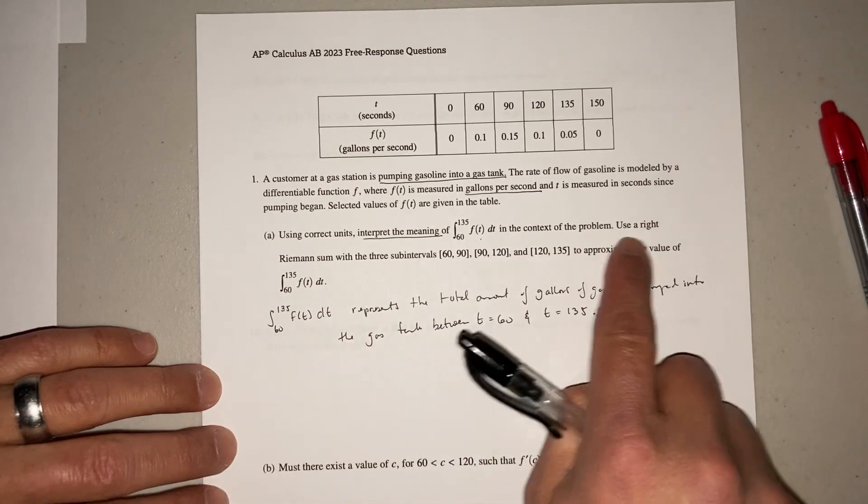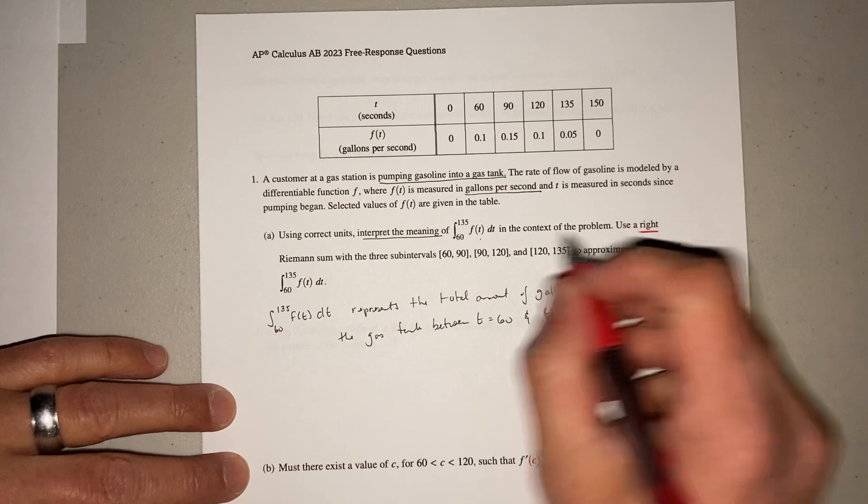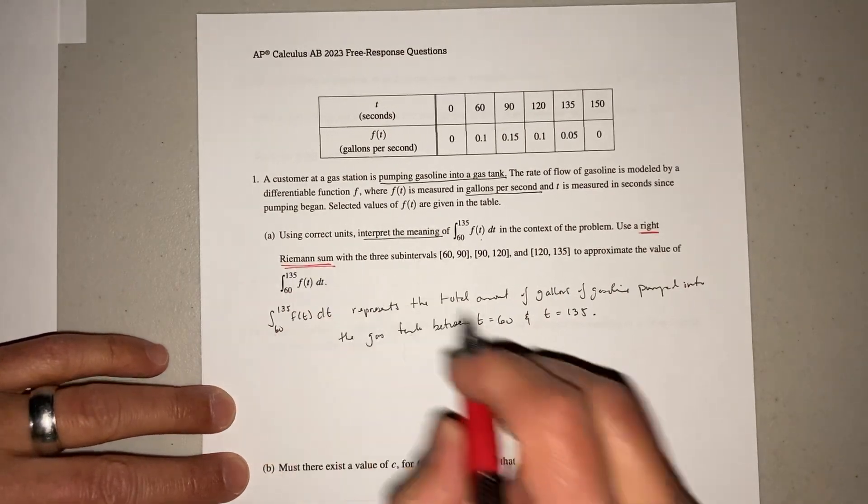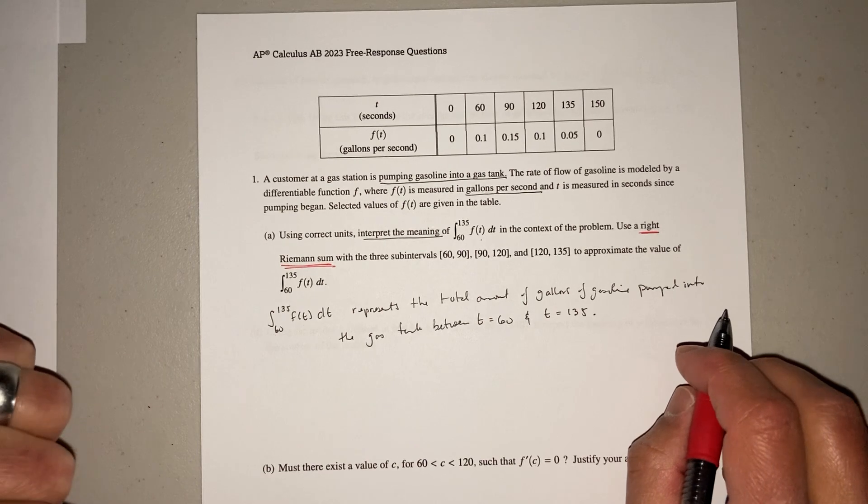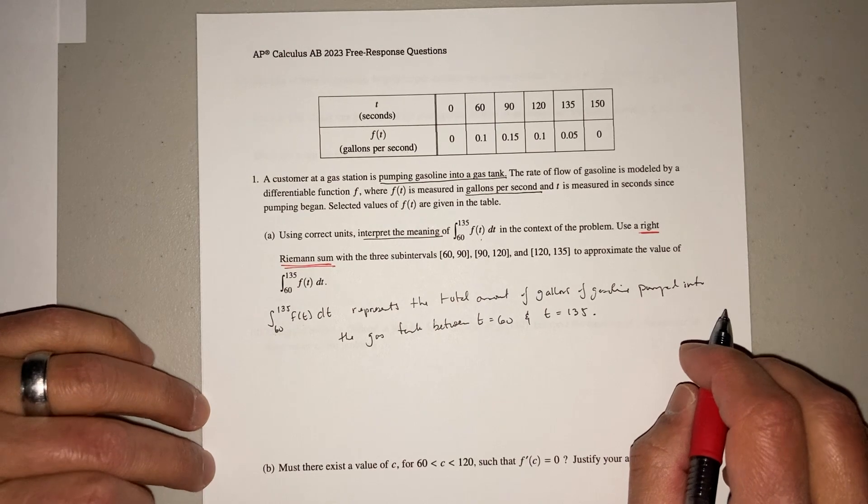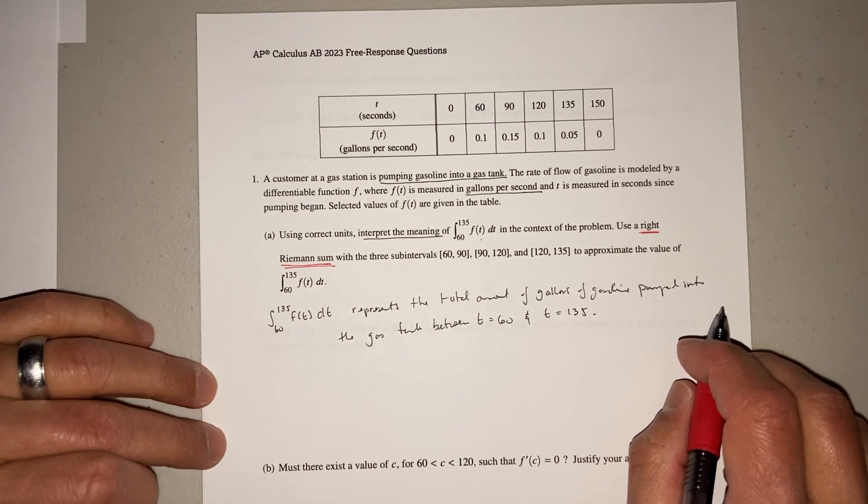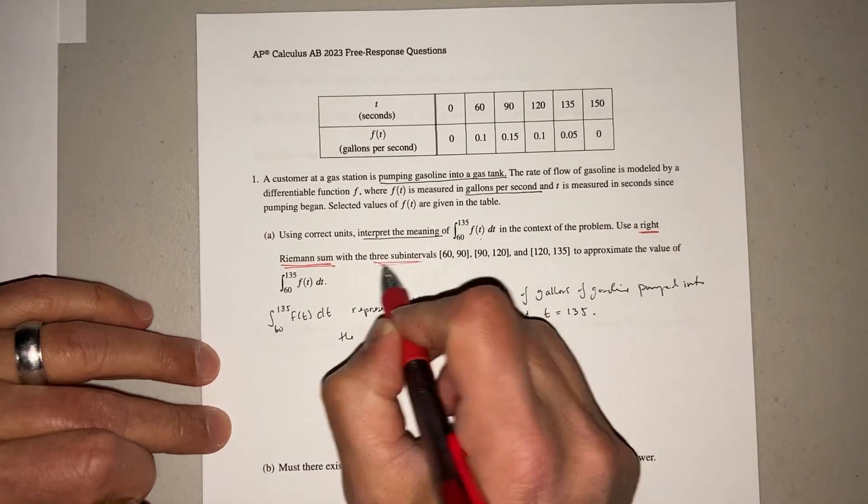Now, the second part, it says use a right Riemann sum. So that's very, very common. You're going to see right Riemann sum, you're going to see left Riemann sum, you're going to see trapezoidal. You sometimes see the midpoint. I don't see that too often, but you should know it. And it says three subintervals.